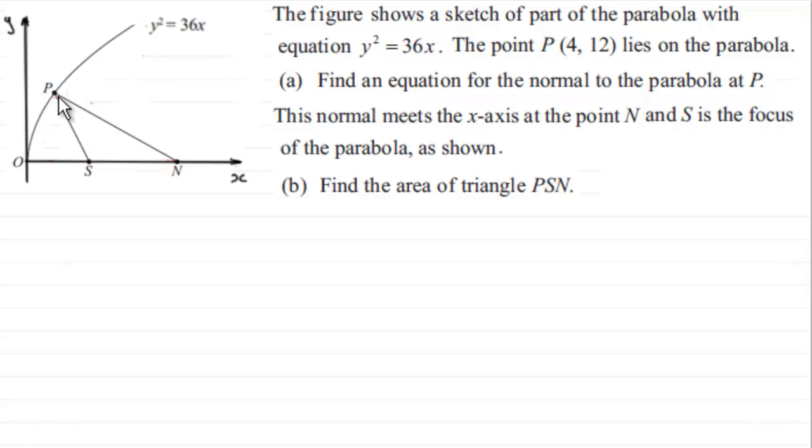We're given this figure that shows a sketch of part of the parabola with equation y squared equals 36x. The point P with coordinates 4, 12 lies on the parabola. In part A we've got to find an equation for the normal to the parabola at P. We're told this normal meets the x-axis at the point N, and S is the focus of the parabola as shown. We've got to find the area of the triangle PSN.